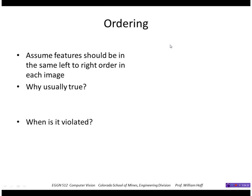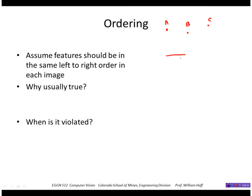An ordering constraint says that features should be in the same left-to-right order in each image. So if I have points A, B, C and two cameras, I expect to see those three points in the same order A, B, C in both the left and right images. However, this is violated if there is a very large difference in depth between those points. In that case, the order in one image might become something like B, A, C instead. So it depends on the scenes and the amount of depth range we can tolerate.